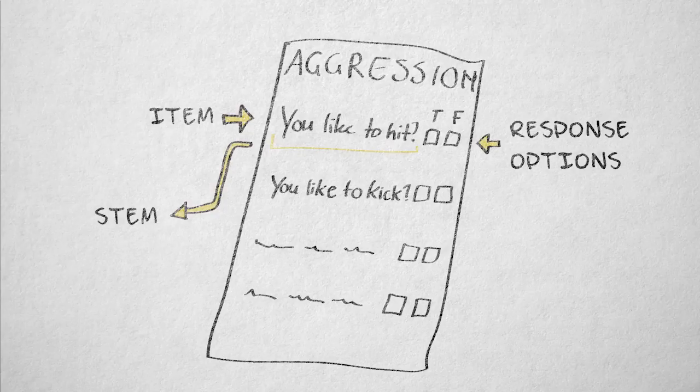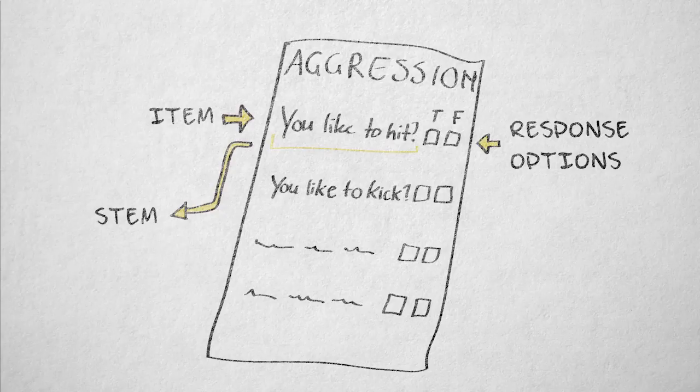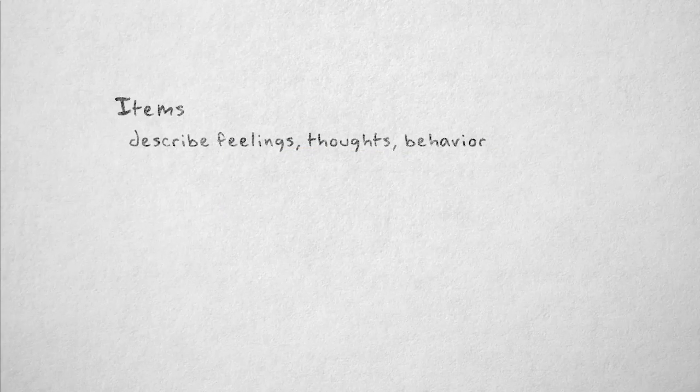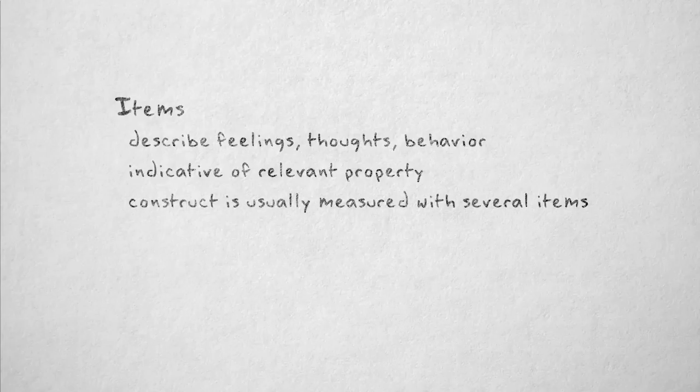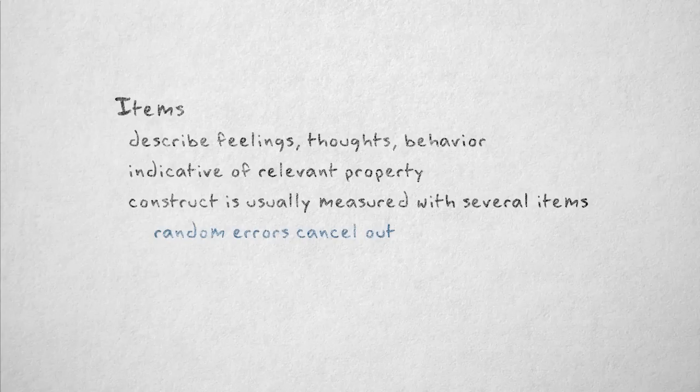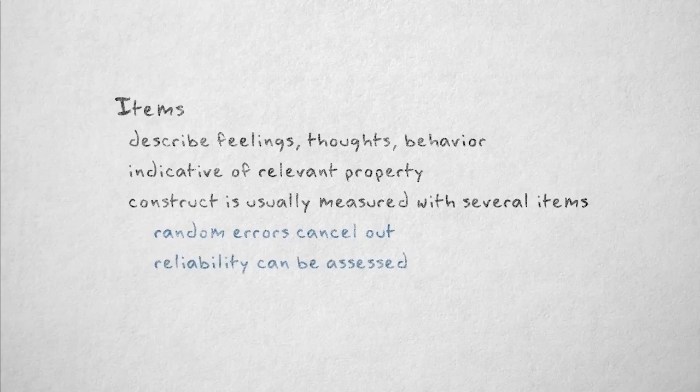A psychological attitude, trait, or state is almost always measured with items that describe feelings, thoughts, or behavior that represent the relevant property. Usually, several items are used to measure the same construct. By using more than one item, random errors will generally cancel out. Using several items also allows us to assess reliability by checking the internal consistency of the items.